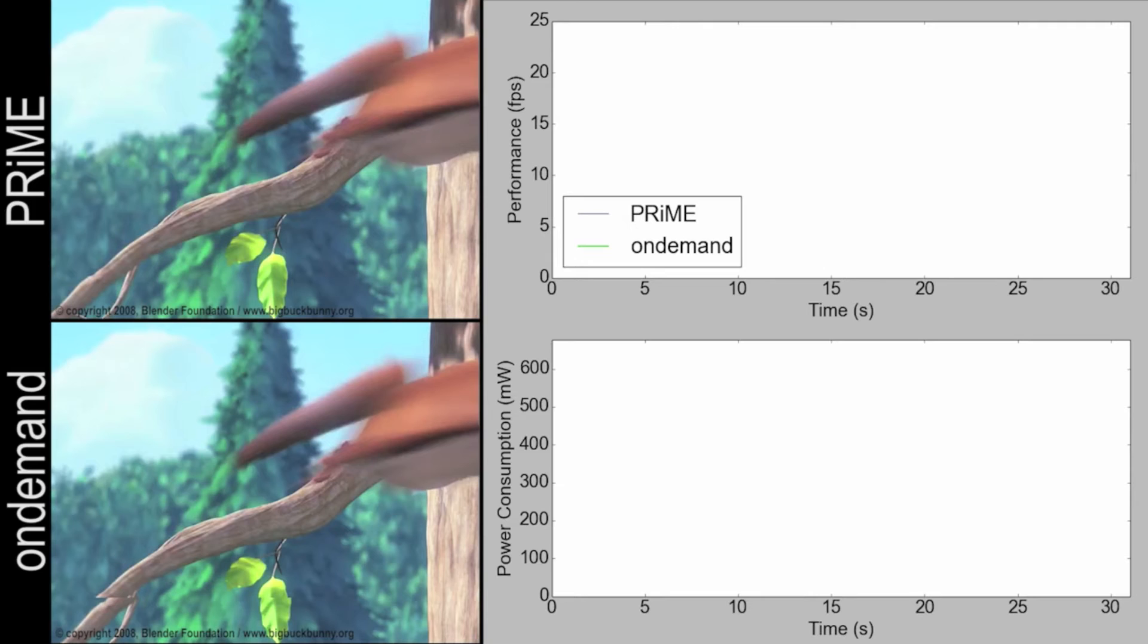And on the right-hand side there are two graphs, one for the power consumption in milliwatts, and the other for performance in frames per second. And we're targeting a frame rate of 24 frames per second here. And the blue lines that appear on that graph will be for the Prime approach, whereas the green line is for that standard Linux approach.